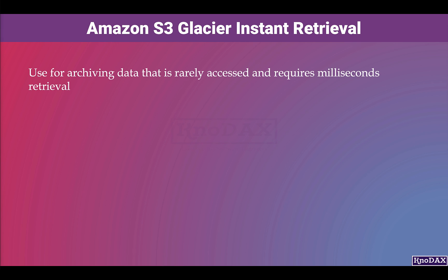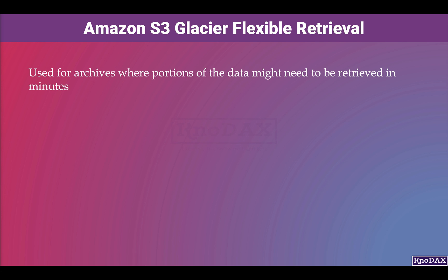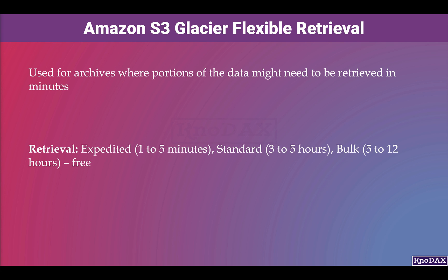S3 Glacier Instant Retrieval is used for archiving data that is rarely accessed and requires millisecond retrieval, good for data accessed once a quarter, with a minimum storage duration of 90 days. S3 Glacier Flexible Retrieval, formerly the S3 Glacier storage class, is for archives where portions of data might need to be retrieved in minutes — using expedited retrieval in 1 to 5 minutes, standard retrieval in 3 to 5 hours, or free bulk retrievals in 5 to 12 hours — also requiring a minimum storage duration of 90 days.